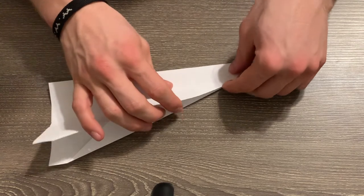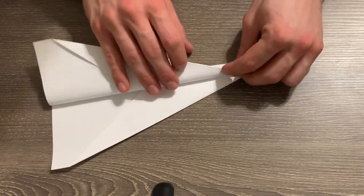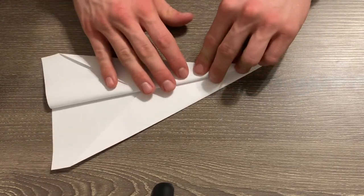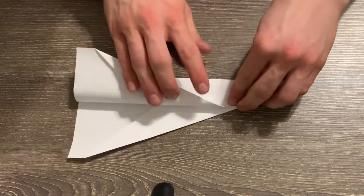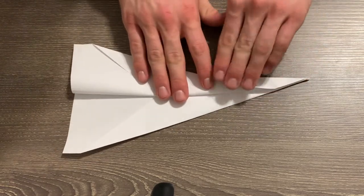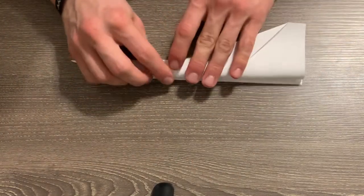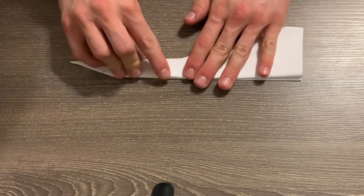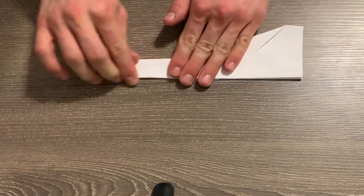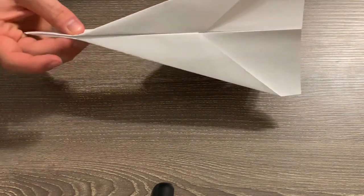Now this is where you can get a little bit creative. Depending on how big you want your wings, you can fold the piece of paper down farther, or maybe not quite as far. So this part's up to you. Make sure that both wings are the same size. And fold the wings up. And there's a pretty simple paper airplane called the basic dart.